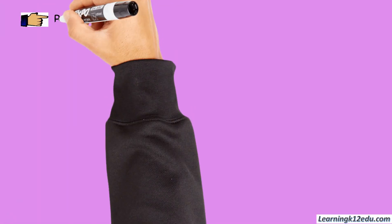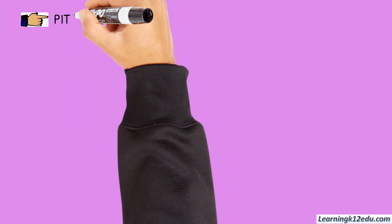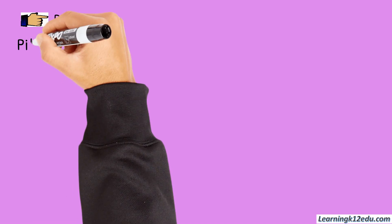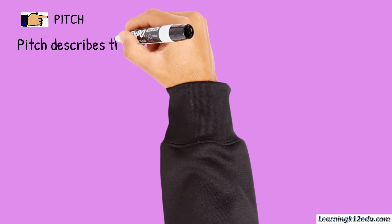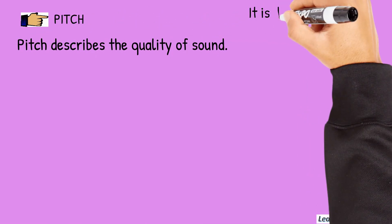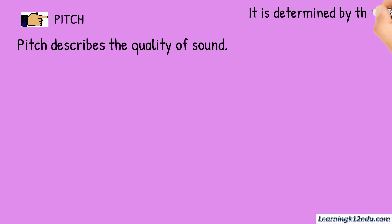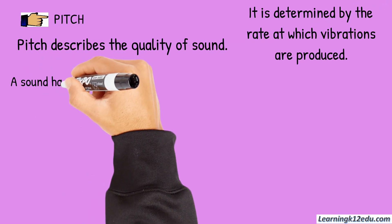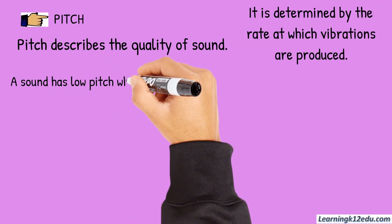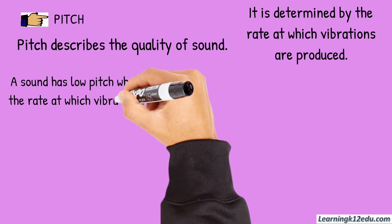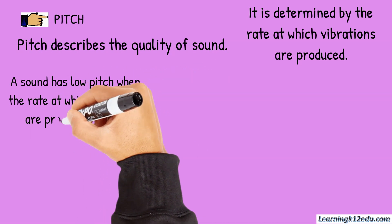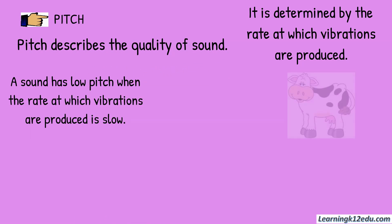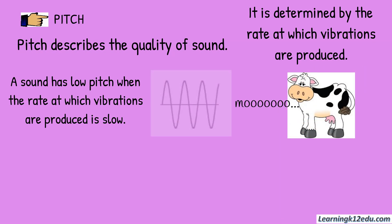The next one is pitch. Pitch describes the quality of sound. It is determined by the rate at which vibrations are produced. A sound has a slow pitch when the rate at which vibrations are produced is slow. For example, when a cow says moo, the pitch is low.